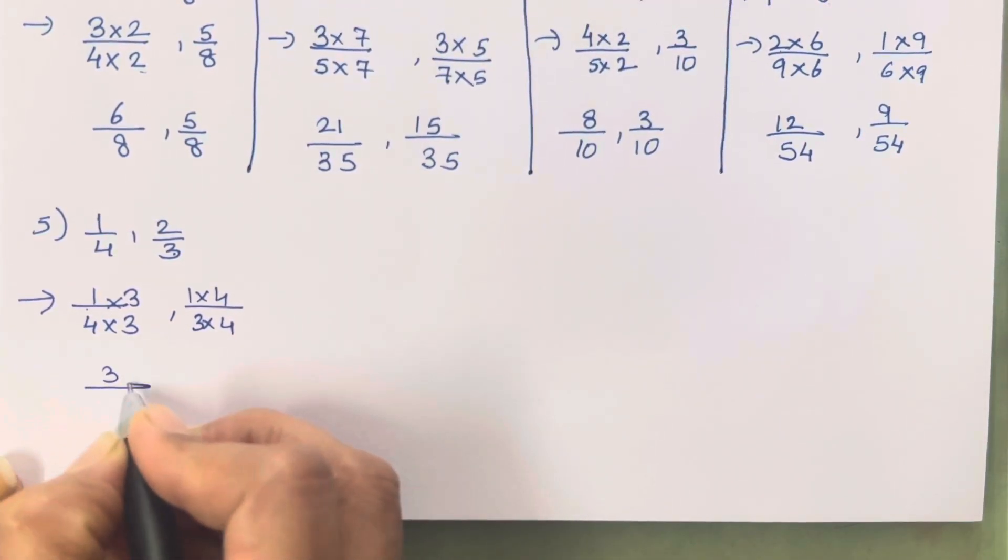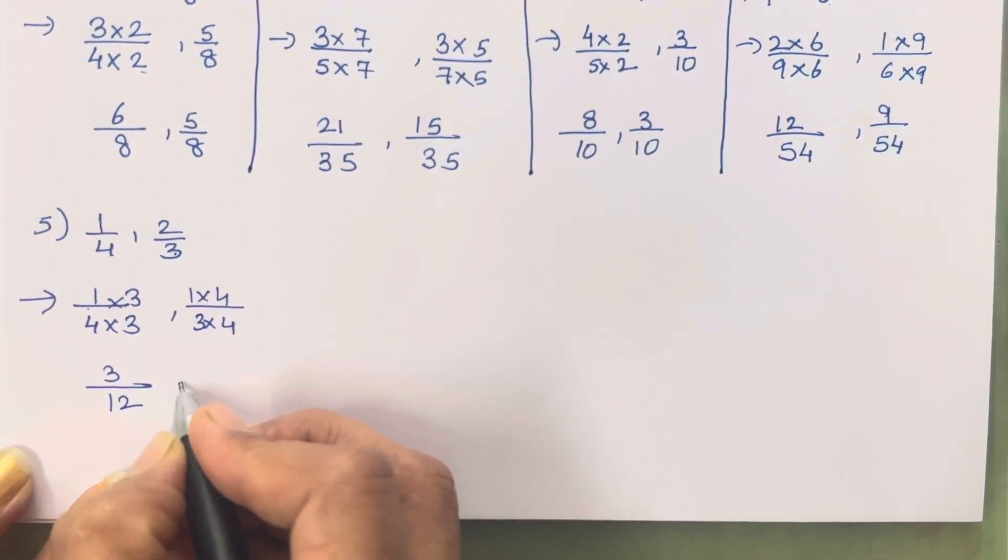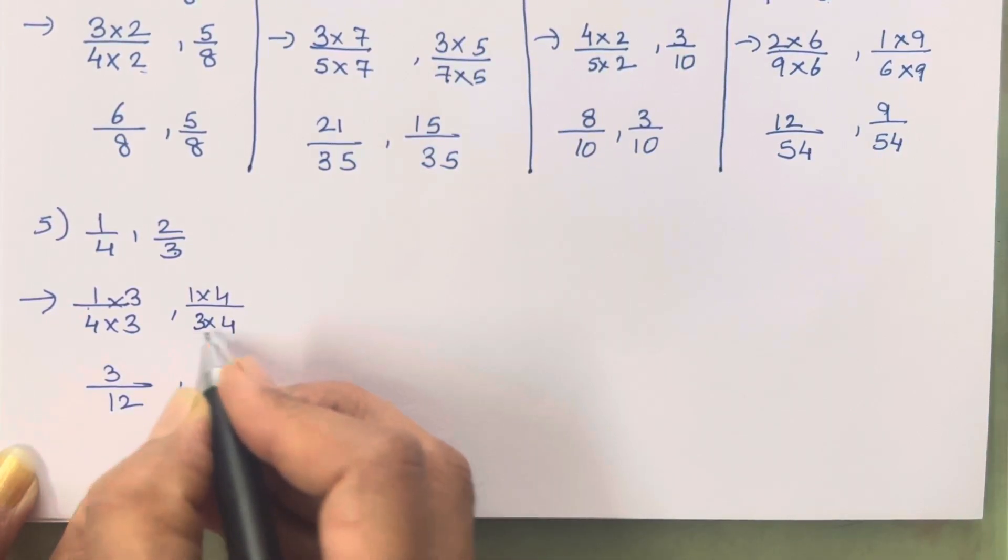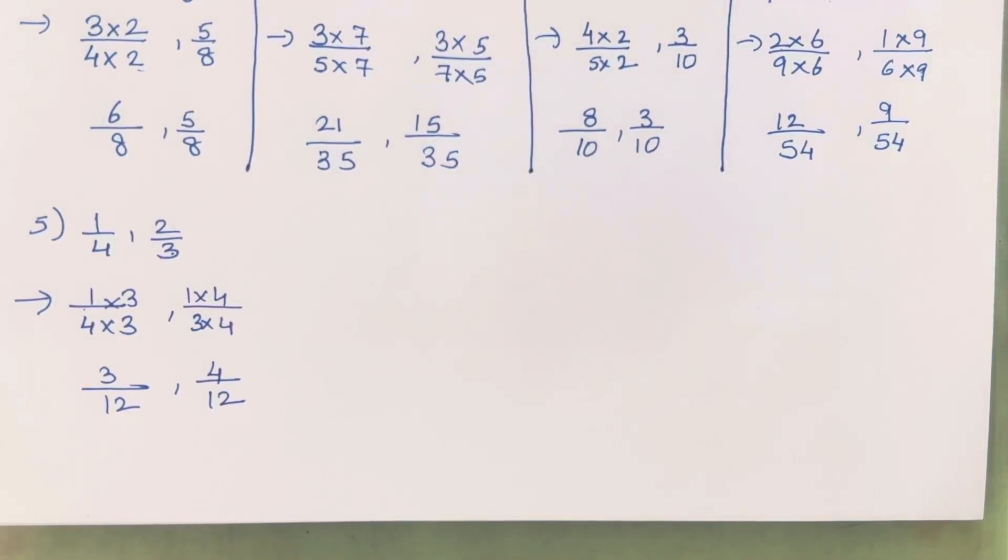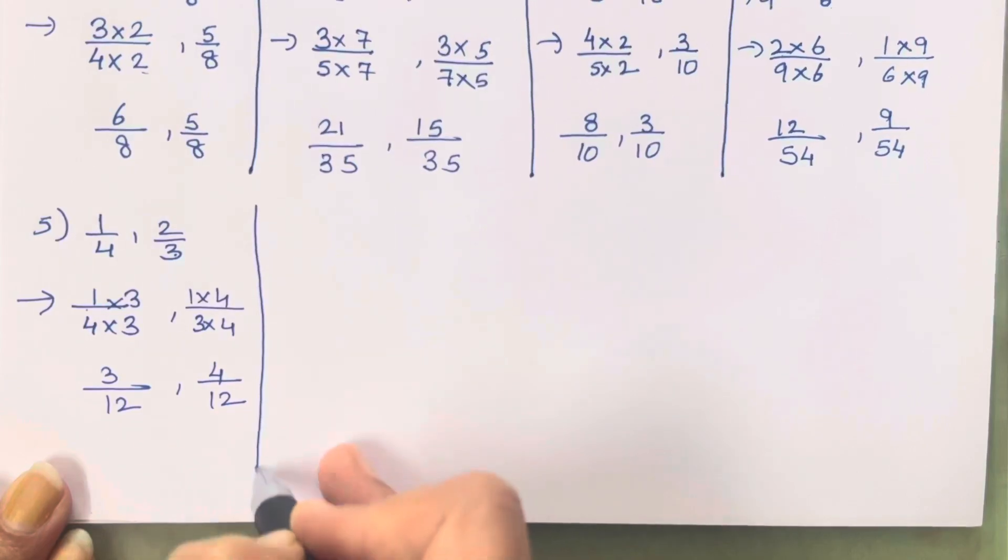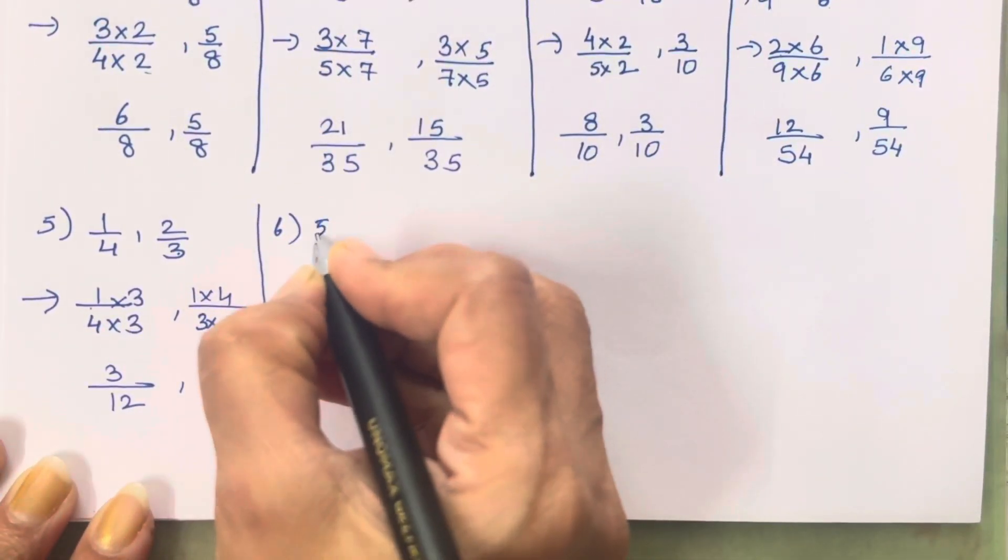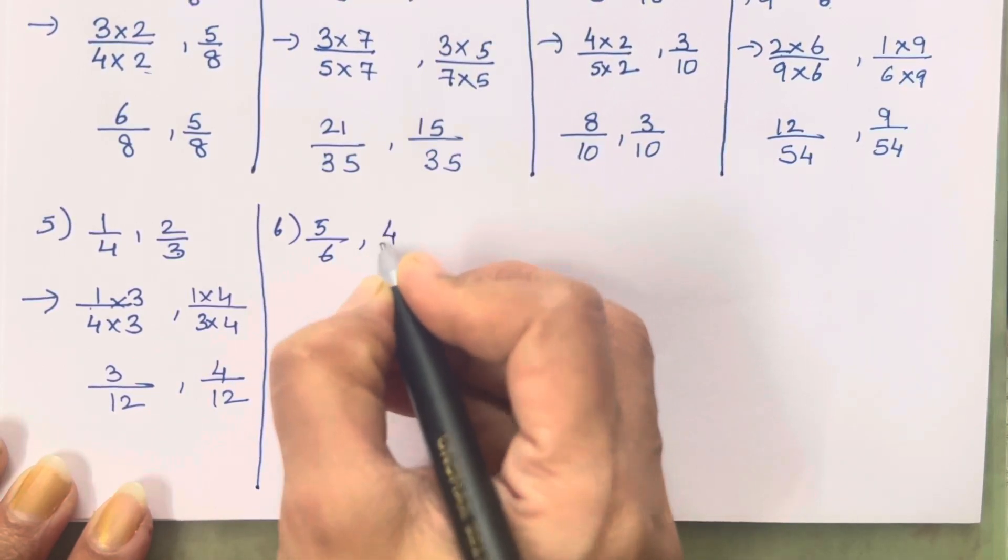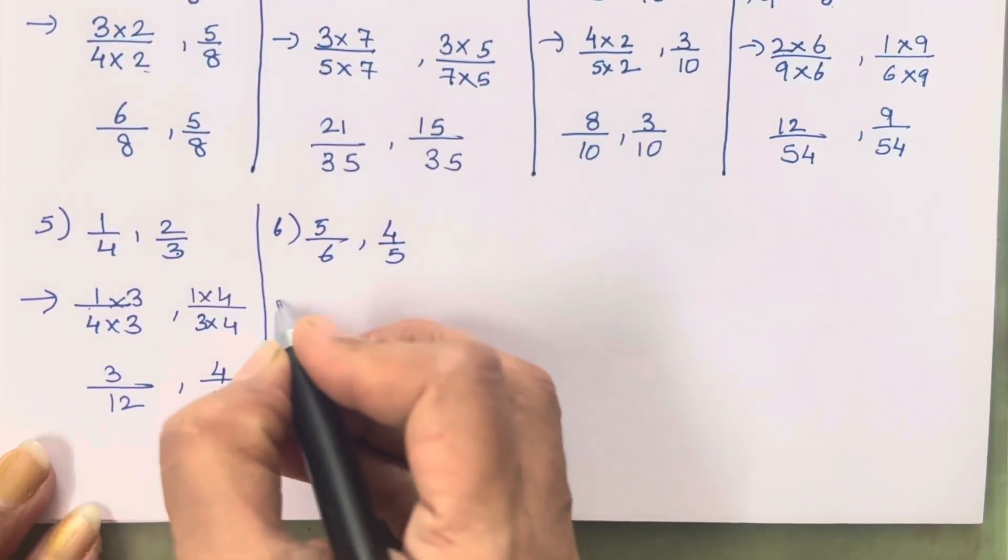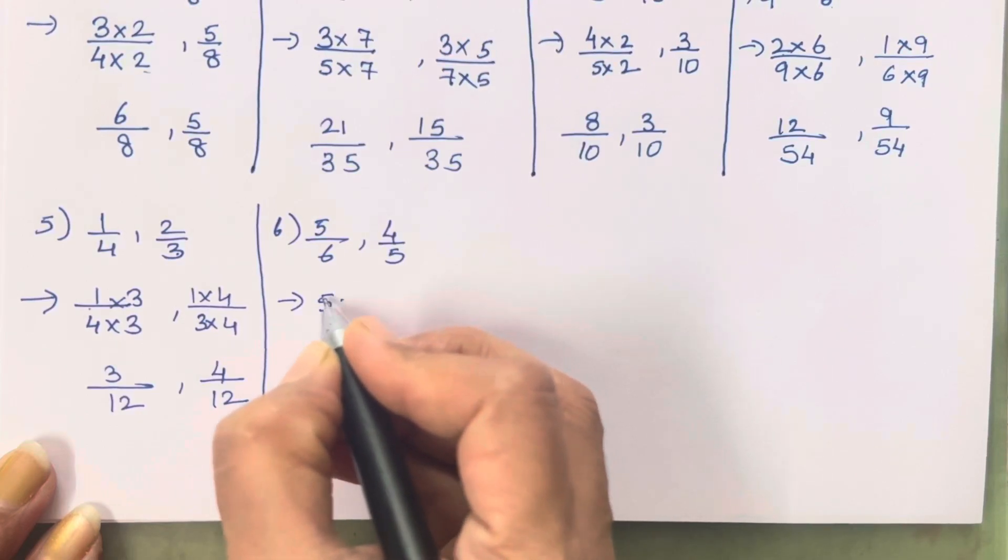2 into 4, 3 into 4. So 1 into 3 is going to be 3, 4 3s are 12. 2 4s are 8, 3 4s are 12. Next is the sixth sum. 5 upon 6 and 4 upon 5. Dono alag numbers hai, dono ko ek dusre se multiply karayenge. That is 5 into 5, 6 into 5.